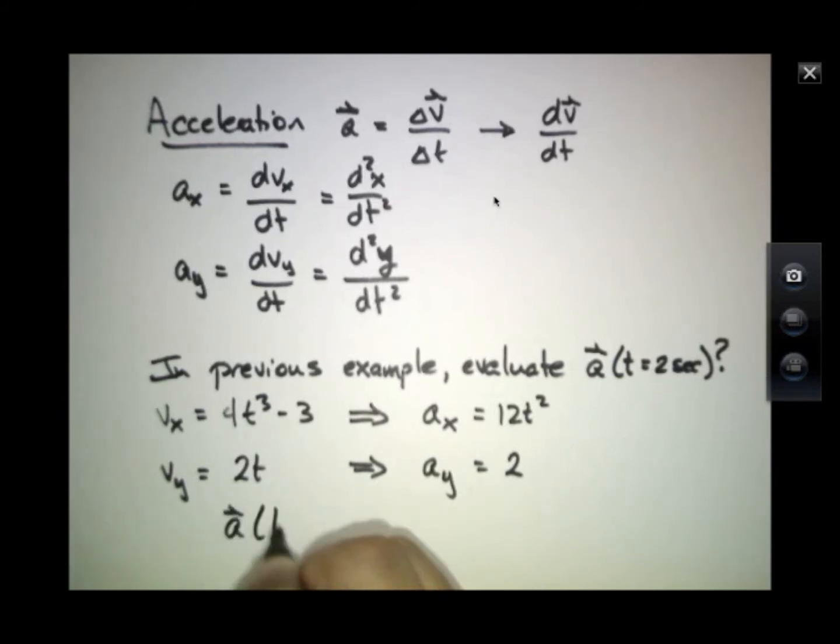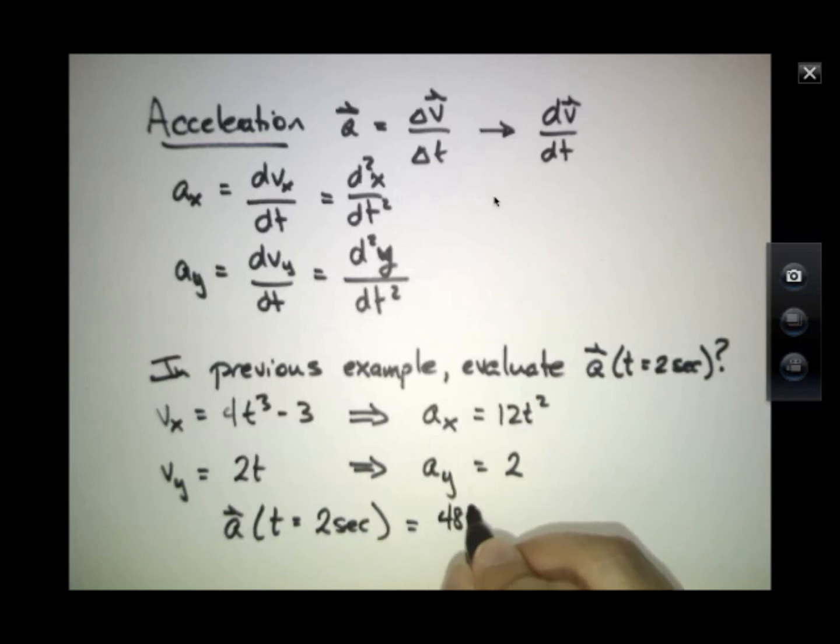So the vector A at time 2 seconds is 48 meters per second squared x-hat plus 2 meters per second squared y-hat.